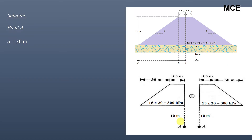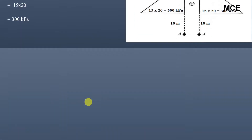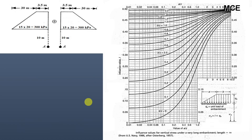To find the influence factor, we first find the required values. Here a = 30 m, which is the base of the triangle; b = 3.5 m, the top width of the embankment; z = 10 m, the depth; and q is the unit loading due to the embankment, which is γ × H = 20 × 15 = 300 kPa.